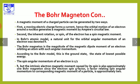In the Bohr atomic model, the natural unit is the orbital angular momentum, which is denoted as h-bar. The Bohr magnetron is the magnitude of the magnetic dipole moment of an electron orbiting an atom with that angular momentum. According to the Bohr model, the ground state is the lowest possible energy state of the atom.